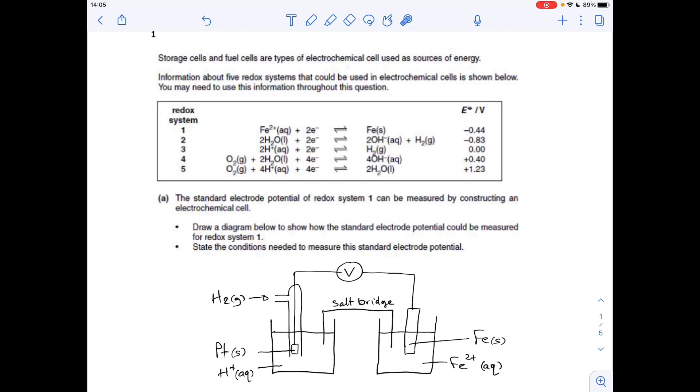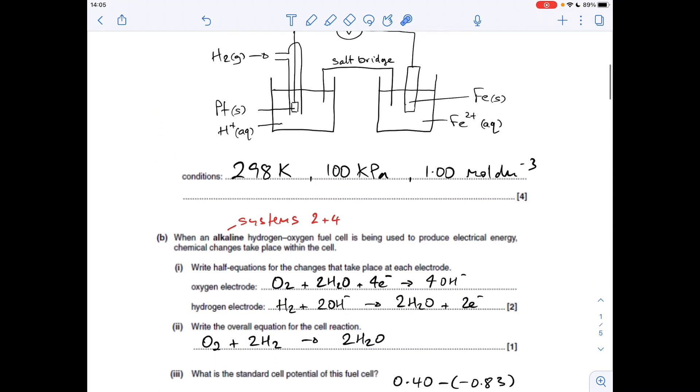So which direction will the half equations go in for the electrode reactions? This is the more positive of the two voltages, +0.4 volts compared to -0.83. So this oxygen electrode will proceed in this direction, left to right. Whereas this one will run that way because it's the less positive voltage.